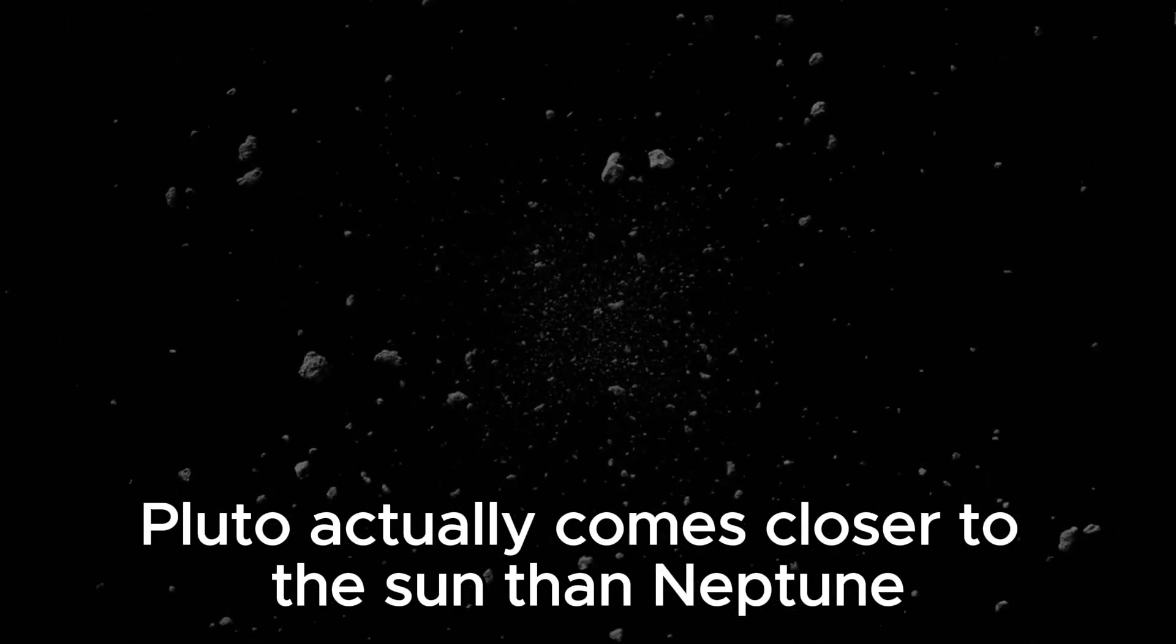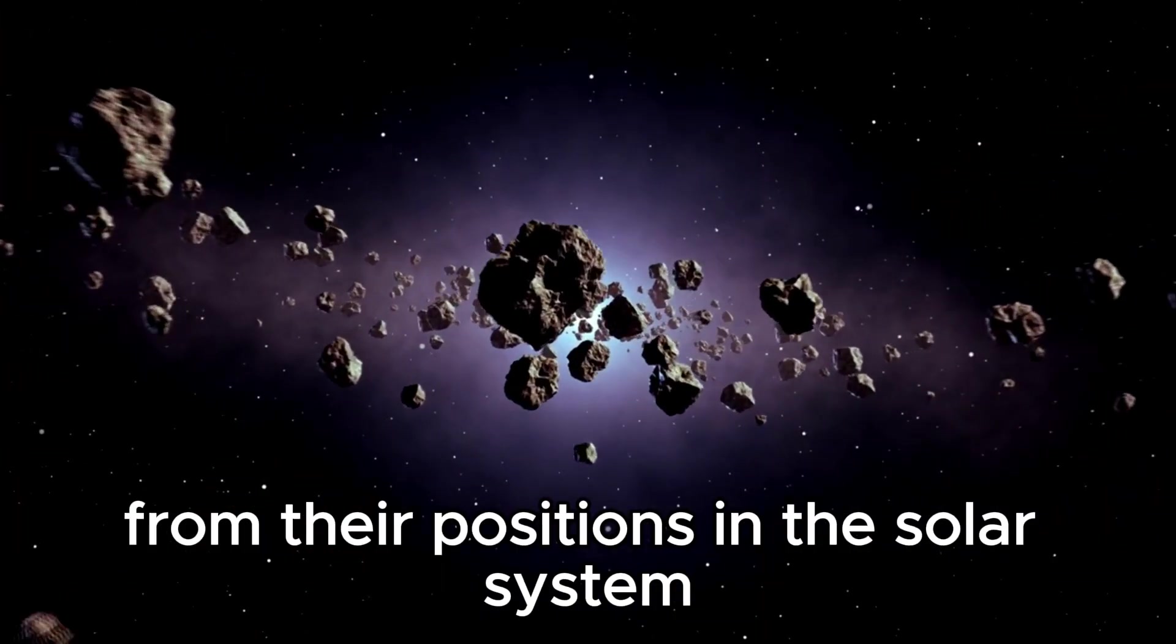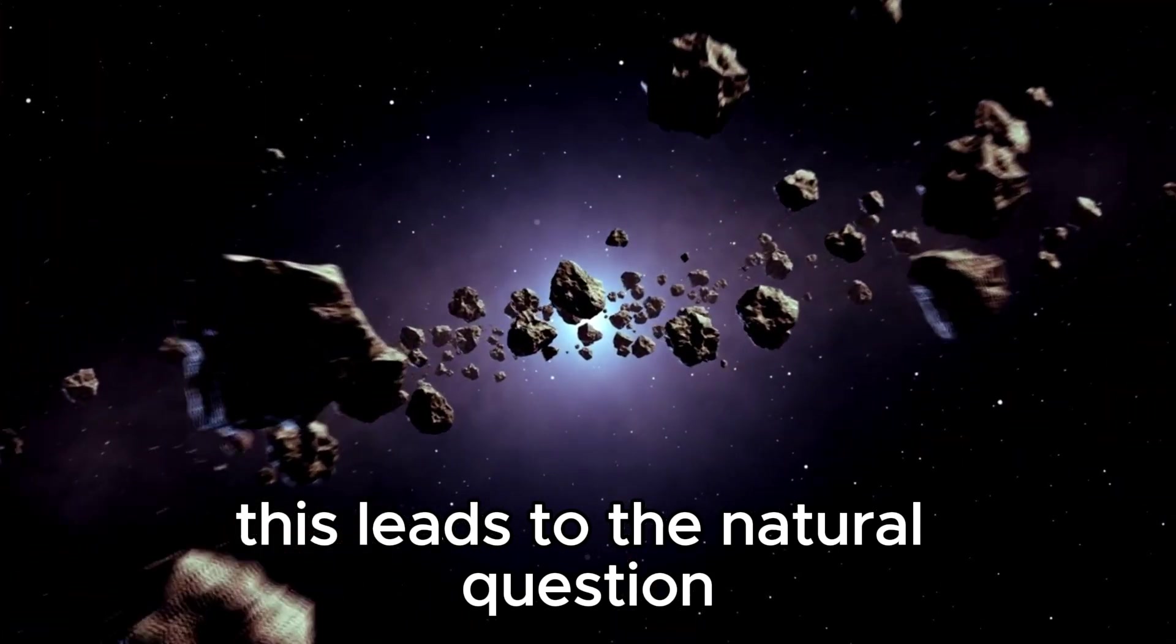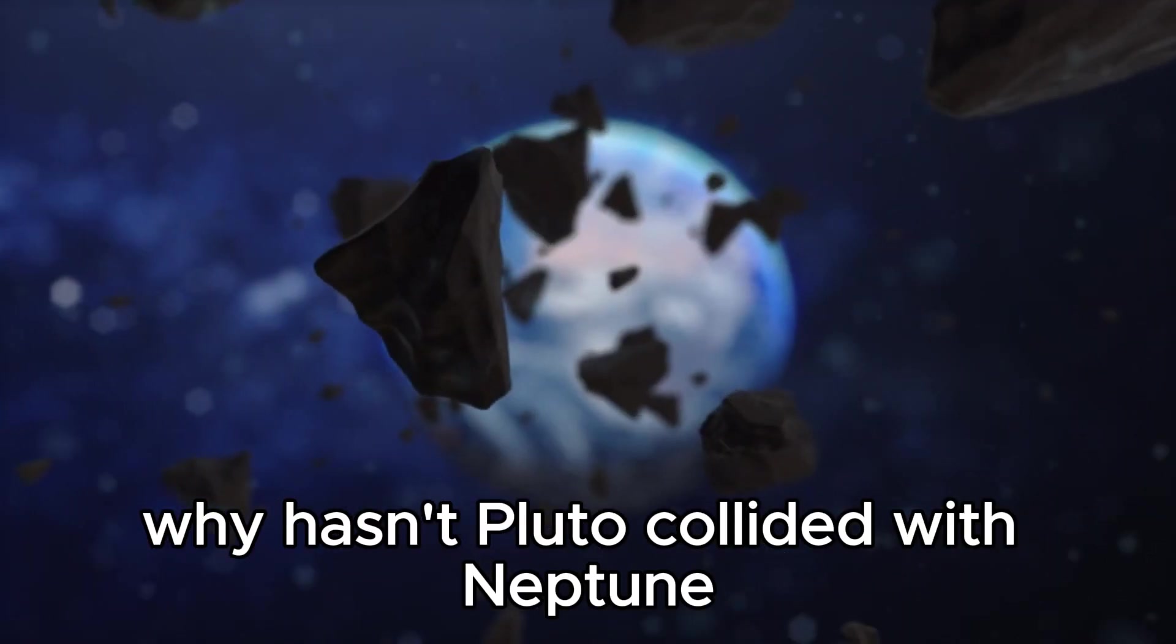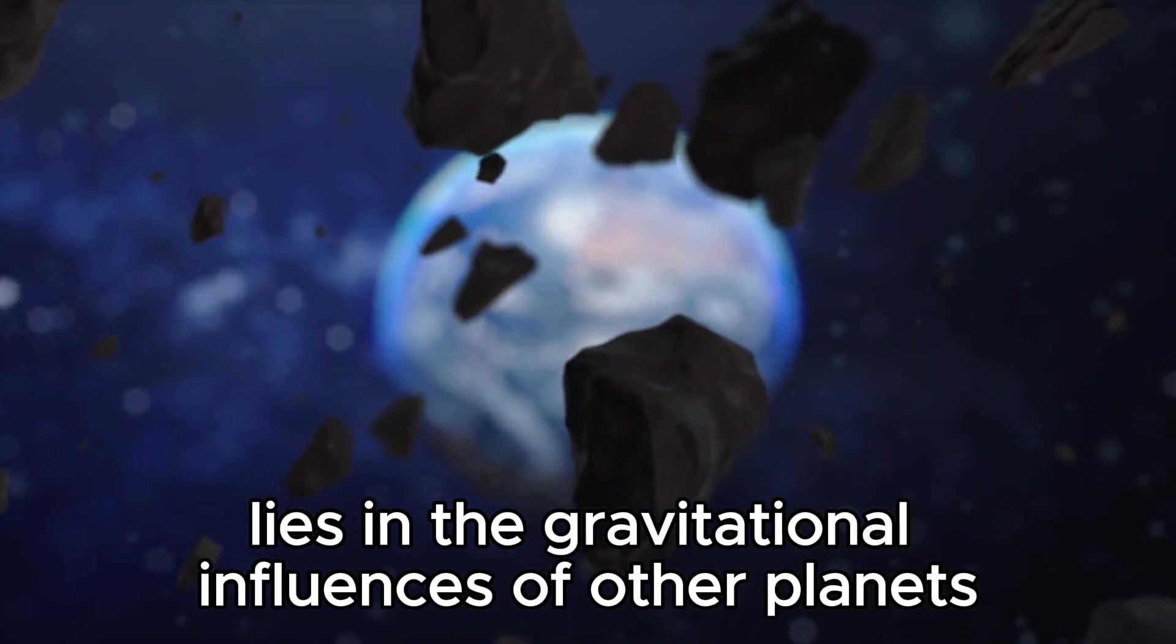For about 20 years in each orbit, Pluto actually comes closer to the Sun than Neptune, defying what we might expect from their positions in the solar system. This leads to the natural question: Why hasn't Pluto collided with Neptune? The answer lies in the gravitational influences of other planets.